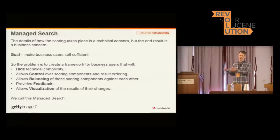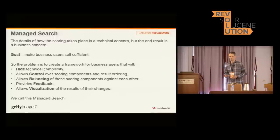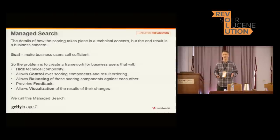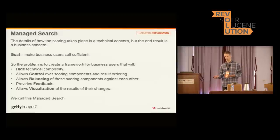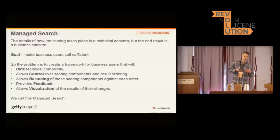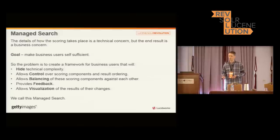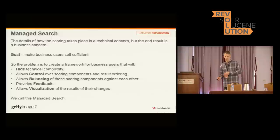Search is critical to a site like Getty Images because you can't buy our images unless you find them. The goal was to allow our business users to take control without having to get technology involved in that process anymore. This managed search framework conceptually needed to do five things: hide technical complexity from business users while giving them control over the different scoring components and the custom shuffle; allow them to balance those different factors against each other; give them immediate feedback on the effects of their changes; and allow visualization of the effects through empirical data — charts and graphs. A lot of business users, even if they're not technically proficient, are often very good with numbers and spreadsheets, so data representation is very important.